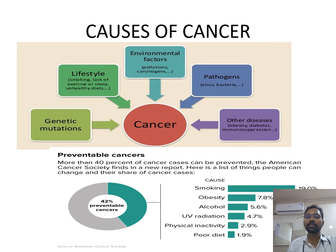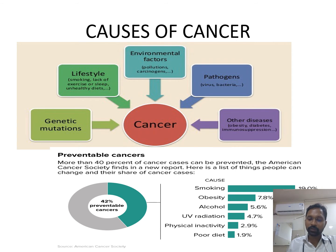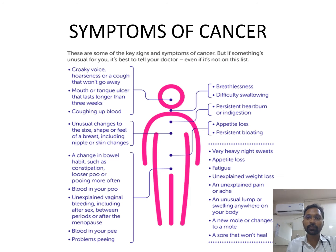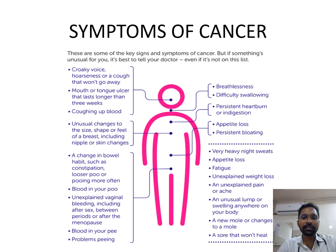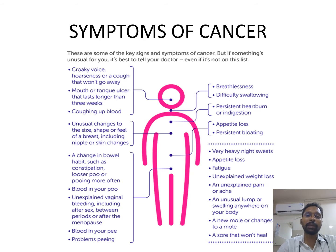Almost 40-42% of cancers can actually be prevented by living a healthy life. So what are the symptoms of cancer? There can be multiple symptoms, and they usually depend upon the primary site from where the cancer has originated, or the metastatic lesions where the disease has already spread.